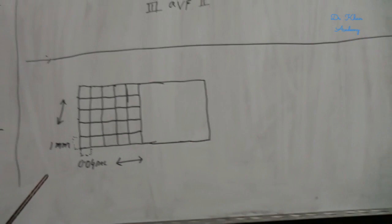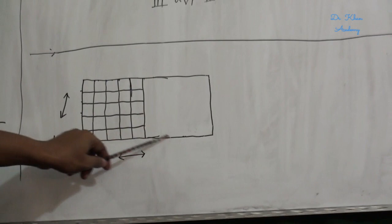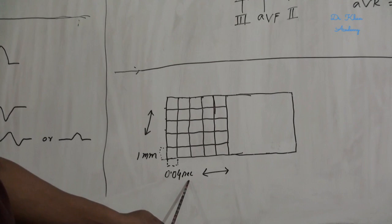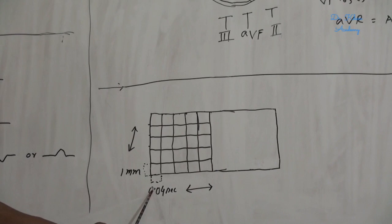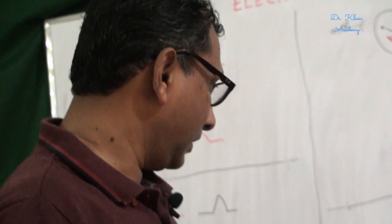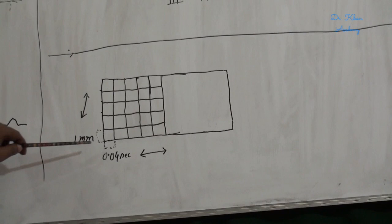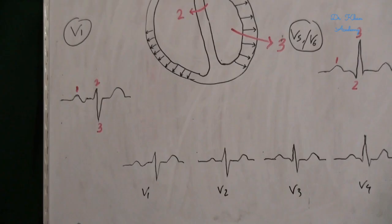Now I am going to discuss a normal ECG paper. These are the large squares and these are the small squares. A large square contains 25 small squares. Right to left direction indicates duration — one small square duration is 0.04 second, so 5 small squares, that is one large square, duration is 0.04 × 5 = 0.2 second. Above downwards direction indicates height or depth — one small square height is 1 millimeter, so one large square height is 5 millimeters.